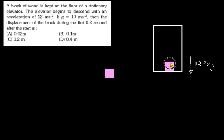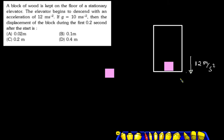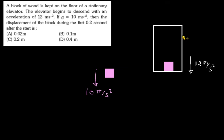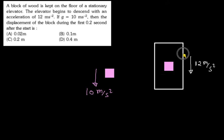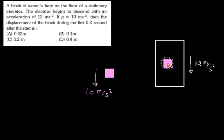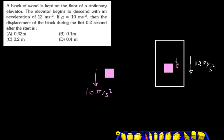If you leave the block freely, then the acceleration of the block will be 10 m per second square — it cannot be more than that. The lift is falling faster, but the block will only accelerate at 10 m per second square. So the block will not stay in contact with the lift floor. The block is simply in a free fall state with acceleration 10 m per second square.